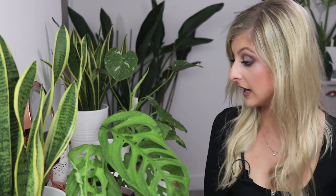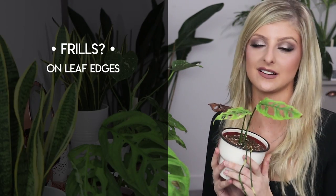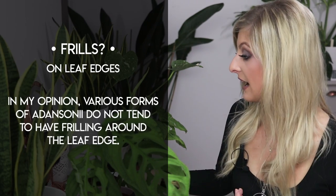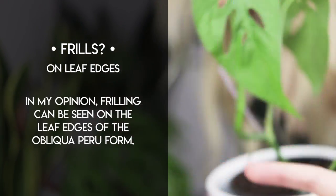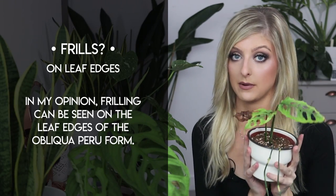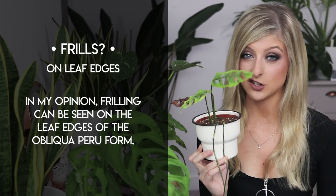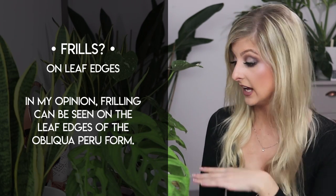The next difference is my personal opinion — I haven't had it confirmed. From looking at the three forms of adansonii and the obliqua, I can honestly say that an obliqua seems to have frills around the edge of the leaves. Even the narrow form of adansonii, which I'd argue is closer to an obliqua than regular adansonii, has no frills at all. For the Peruvian form specifically, I've noticed in many images that the edges of the leaves do seem to be rather frilled. That is my opinion — not an official difference.